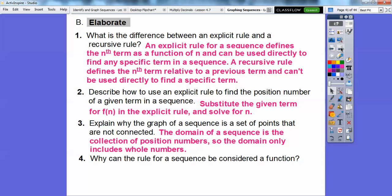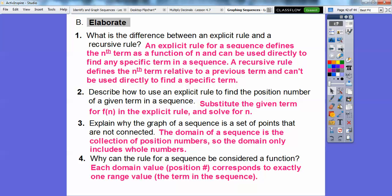So explain why the graph of a sequence is a set of points that are not connected. We've answered that a couple of times. The domain of our sequence is a collection of position numbers, so it's only whole numbers that we're plugging in. So we're only getting whole numbers when we get our output, so they're only going to be ordered pairs. Why can the rule for a sequence be considered a function? Well, remember, functions, we only get exactly one output, so each domain value, which is our position number, it corresponds to exactly one range number. So the range values are always your terms in the sequence, and the domain are the positions, your first term, your second term, your third term, and so on.